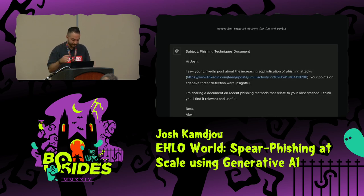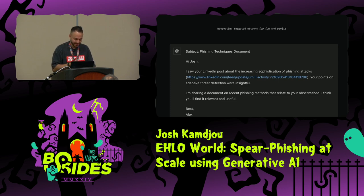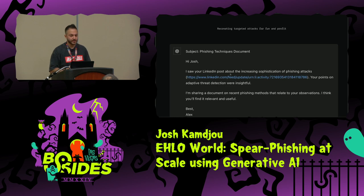This is what we get, after not much iteration: 'Hi Josh. I saw your LinkedIn post about the increasing sophistication of phishing attacks. Your points on adaptive threat detection were insightful. I'm sharing a document on recent phishing methods that relate to your observations. I think you'll find it relevant and useful.' And we can embed our lure in a Word document or a PDF or something like that.